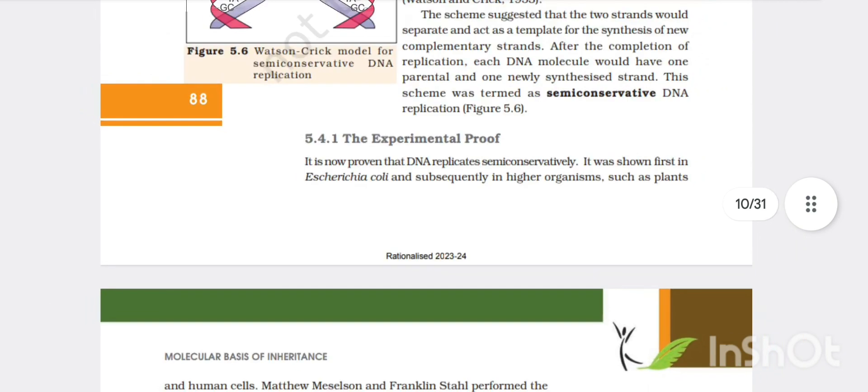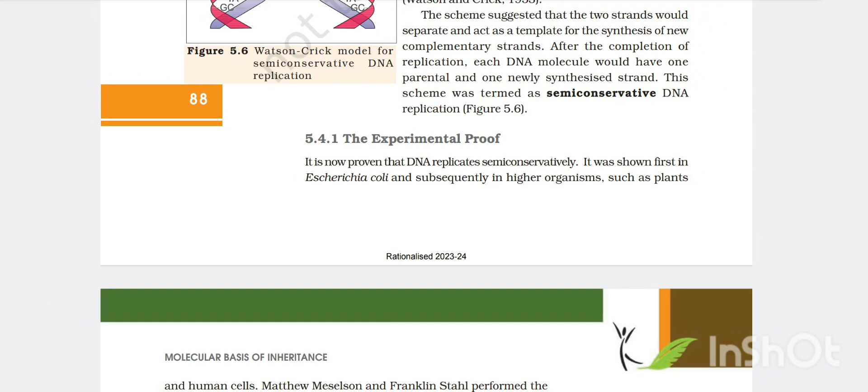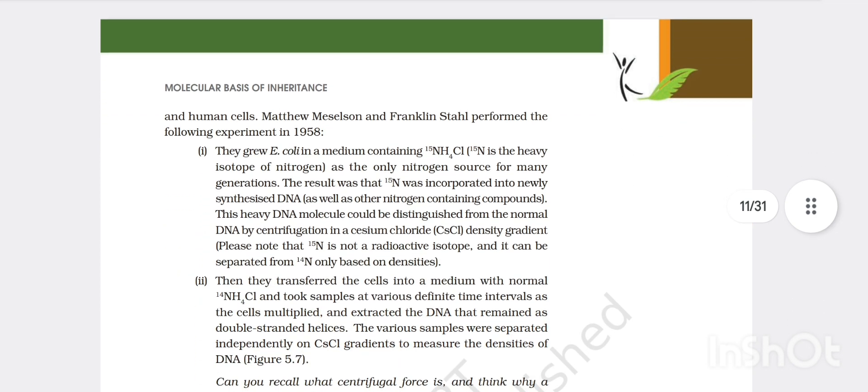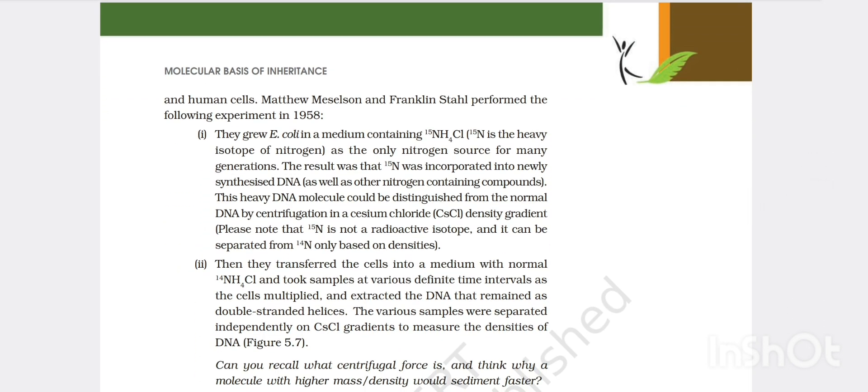The experimental proof - it was now proven that DNA replicates semi-conservatively. It was shown first in Escherichia coli and subsequently in higher organisms such as plants and human cells. Meselson and Franklin Stahl performed the following experiment in 1958. They grew E. coli in a medium containing NH4Cl where the nitrogen N is heavy isotope of nitrogen that is N15 as the only nitrogen source for many generations.